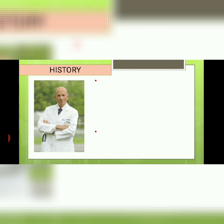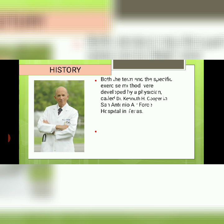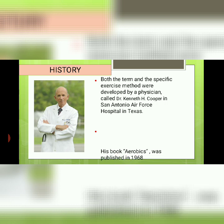Regarding history, Archibald Hill, a great physiologist, introduced the concept of maximal oxygen uptake and oxygen debt in 1922. Hill and Meyerhof shared the 1922 Nobel Prize in Physiology or Medicine for their independent work related to muscle energy metabolism. Building on this work, scientists began measuring oxygen consumption during exercise. Both the term and the specific exercise method were developed by physician Dr. Kenneth H. Cooper in San Antonio Air Force Hospital in Texas. His book 'Aerobics' was published in 1968.